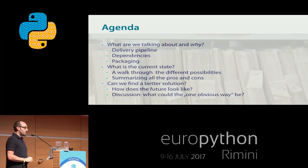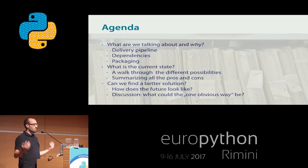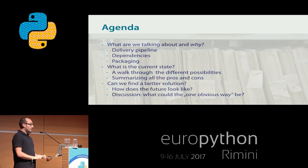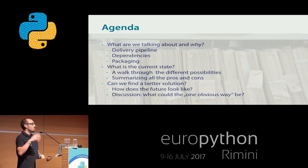It's a long title, so a brief agenda of what we want to do today. First of all, we have to settle some definitions. I want to give you a brief overview of things like what is a delivery pipeline, what I understand about dependencies, maybe some packaging, and then I want to do a small walkthrough of the different possibilities of how to bring Python into production, and I will also give some pros and cons.